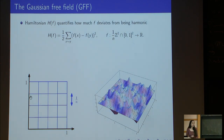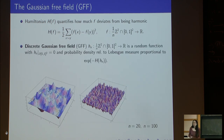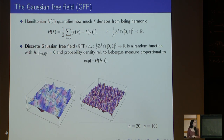To introduce Liouville quantum gravity, we first need the Gaussian free field. We consider a rescaled version of Z² restricted to the unit square. For a function defined on the vertices of this graph, we define the Hamiltonian as the sum of squared differences over adjacent vertices. This Hamiltonian is minimized when, fixing the boundary data, the function is discrete harmonic. The discrete Gaussian free field is a random function on the vertices such that its probability density relative to the product of Lebesgue measure is proportional to e to the power minus the Hamiltonian — it favors functions where adjacent vertices do not have very different values.